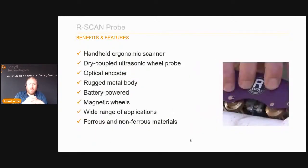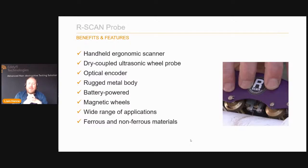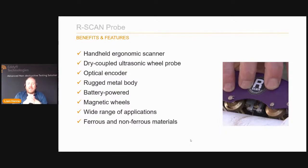One benefit of this shark probe is there's some compliance built into the bottom of it, and overall it's much less operator dependent compared to alternative solutions — really beneficial when considering a robotic solution sent into a specific location. Another option we frequently use is a dry coupled wheel probe. We have an R-scan probe available through our Silverwing Center of Excellence, which has magnetic encoders included so it can be used in non-ferrous or ferrous environments.